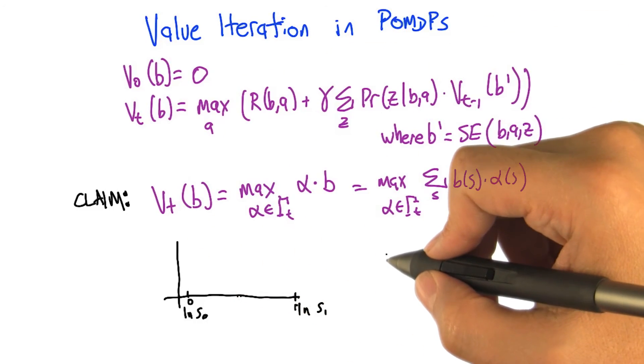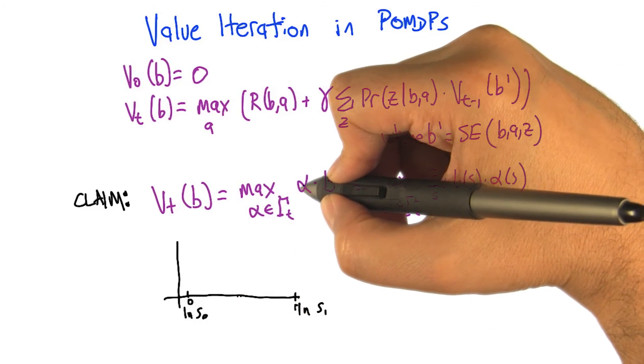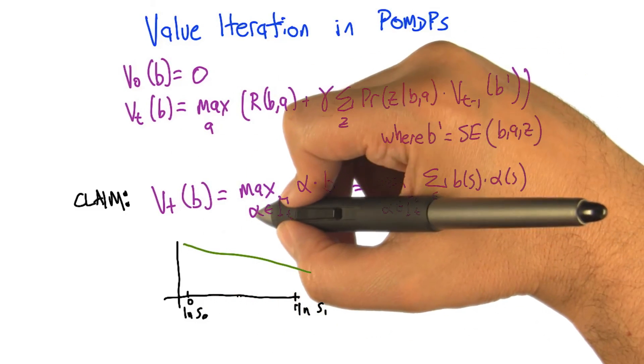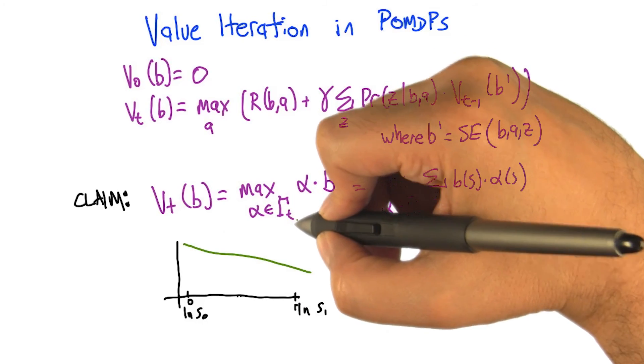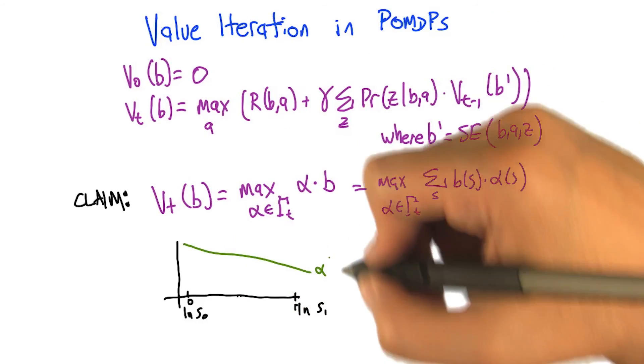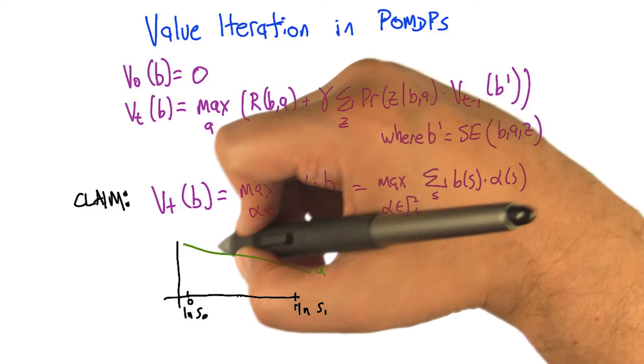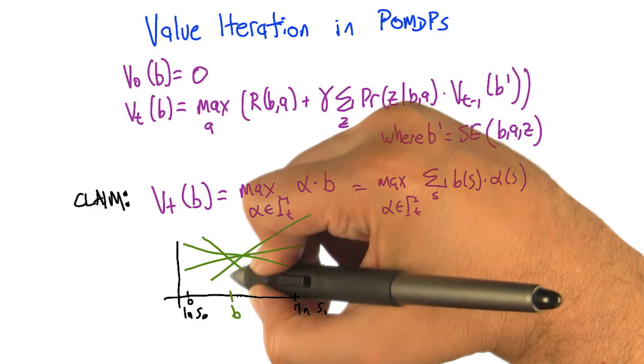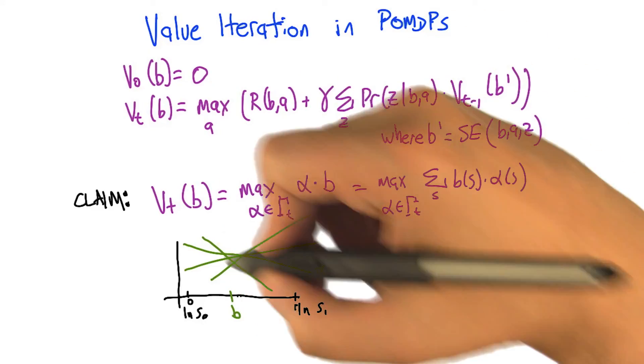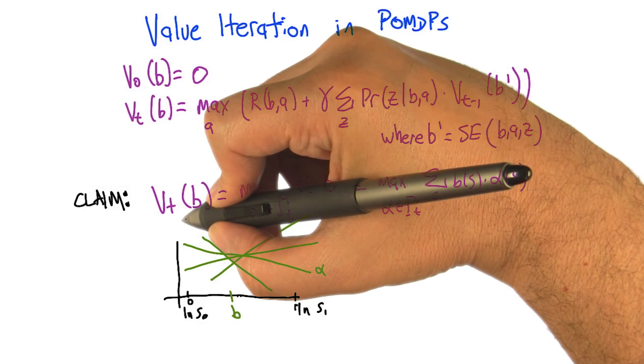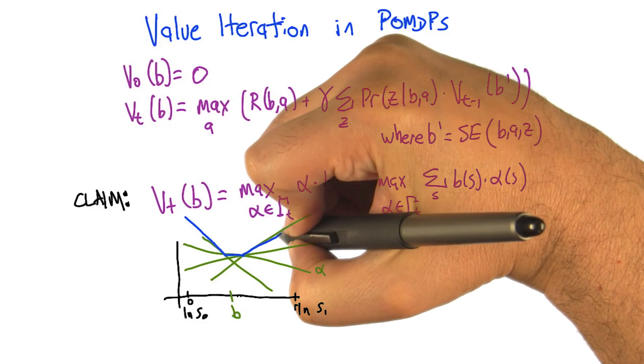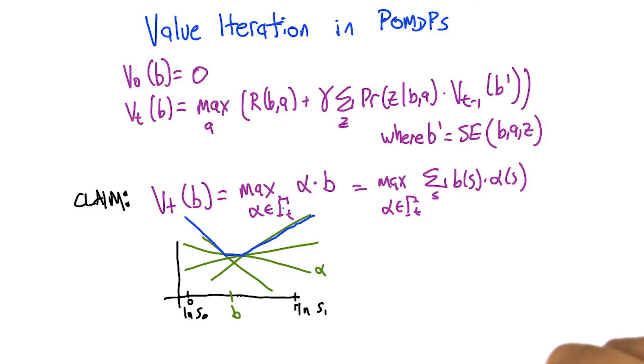So what functions of this kind have in common is that each of these alpha times b is a linear function of the belief state. So each of the alphas in this set, capital gamma sub t, is some linear function of the belief state. And what we're going to do is we have a whole bunch of them. At any given belief state b, what we're doing is we're taking the maximum value of all these possible linear functions. So at the end of the day, the actual function that we've represented is this upper surface of these linear functions, each of which is defined in this set, capital gamma. Does that make some sense?